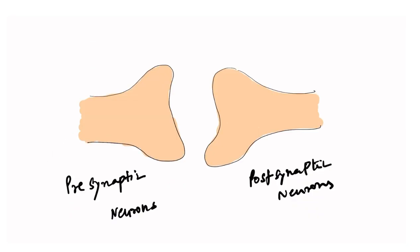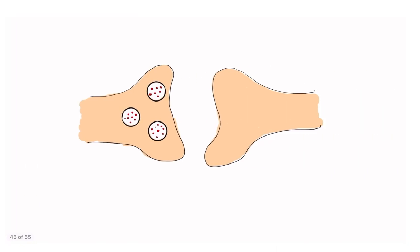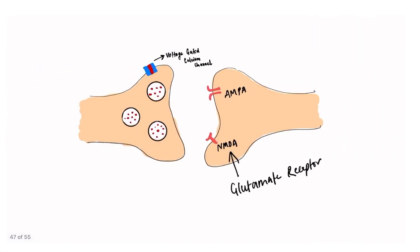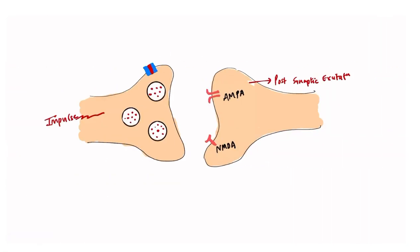Here you can see presynaptic neurons and postsynaptic neurons. There are vesicles in the presynaptic neurons which contain neurotransmitters. There is also a voltage-gated calcium channel in the presynaptic neurons. On the postsynaptic side there are NMDA receptors and AMPA receptors, which are basically receptors for glutamate.